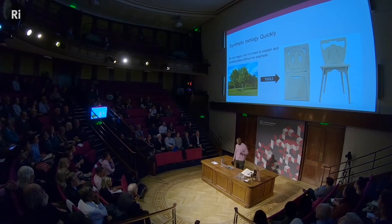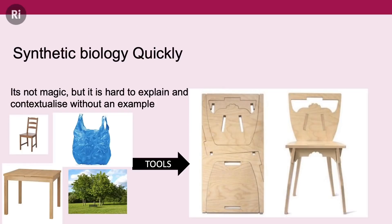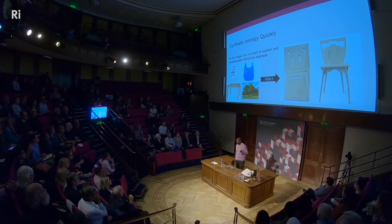With more advanced synthetic biology tools — things you may have heard of in scientific news like CRISPR-Cas9 — you can go even further. Instead of starting with a tree, you could take a chair, break it down, make new pieces, and make a different chair. Or take a table, break it down, and make a chair. Going even further, as illustrated by the picture of the plastic bag: as long as something has the right molecules and you have the right suite of enzymes, you can break down almost anything and make almost anything else. That is the beauty of synthetic biology.